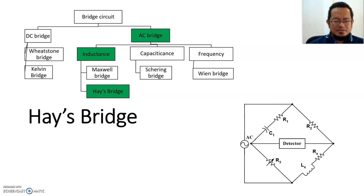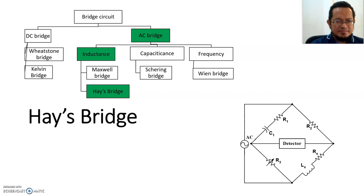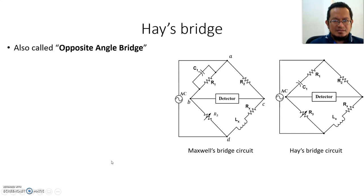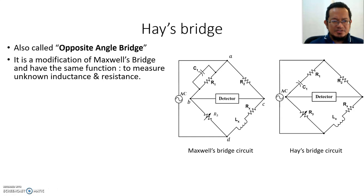Welcome back. Today we will continue our lesson with the second type of AC bridge, which is called Hay's Bridge. Hay's Bridge is also called the opposite angle bridge. It is basically a modification of Maxwell's Bridge and has the same function: to measure unknown inductance and resistance.